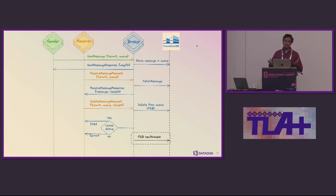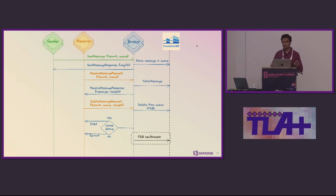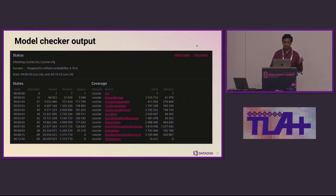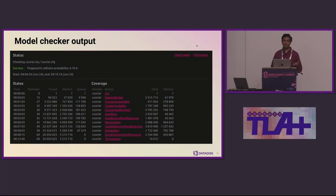This is one sequence of operations, but there could be several others — for example, health checks could happen first, or a receive message could be called first, then a health check, then a send message. What TLA+ does is take every possible state the system can exist in and verify that in no state are our properties violated. We ran this model through the TLC model checker and this is the output we got.